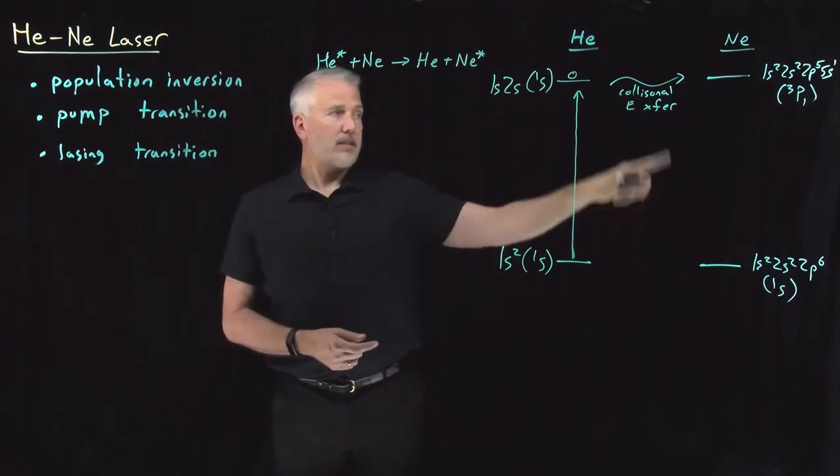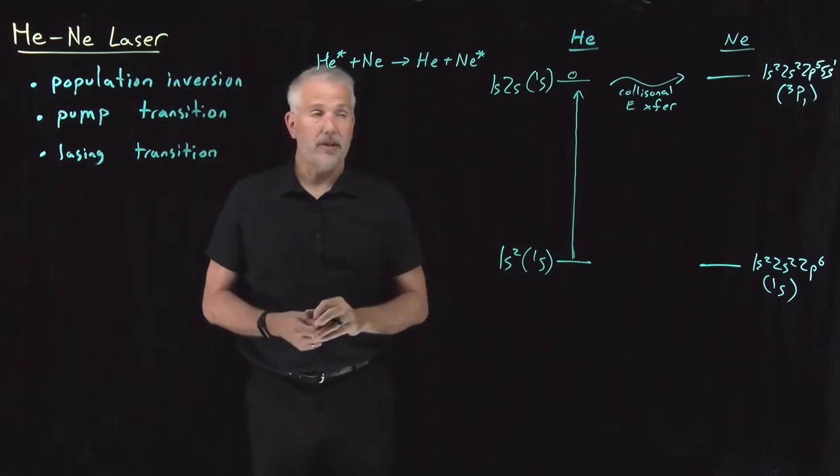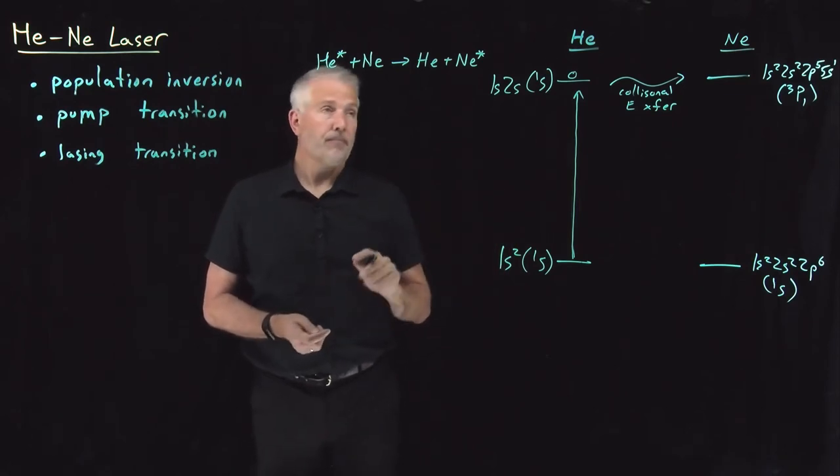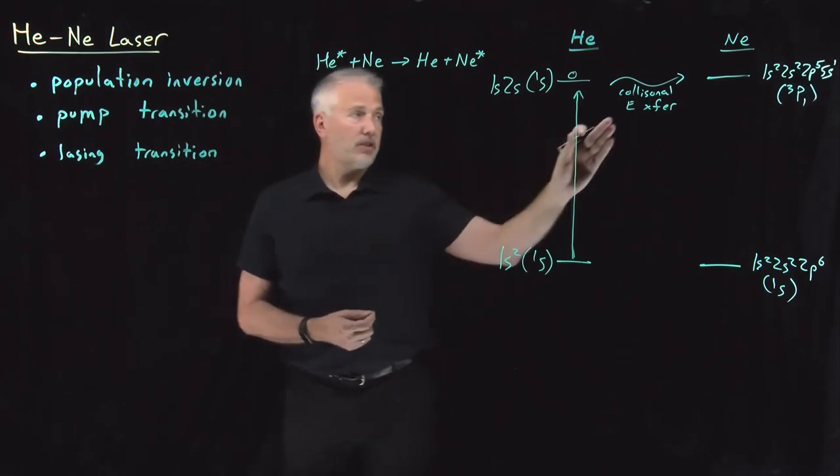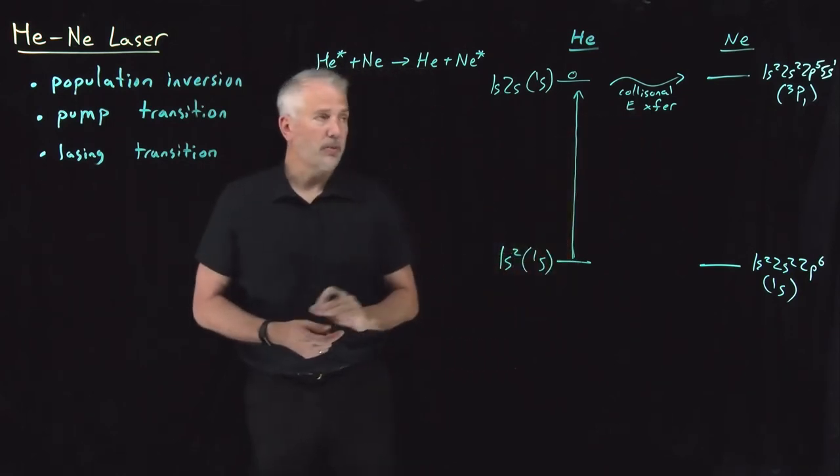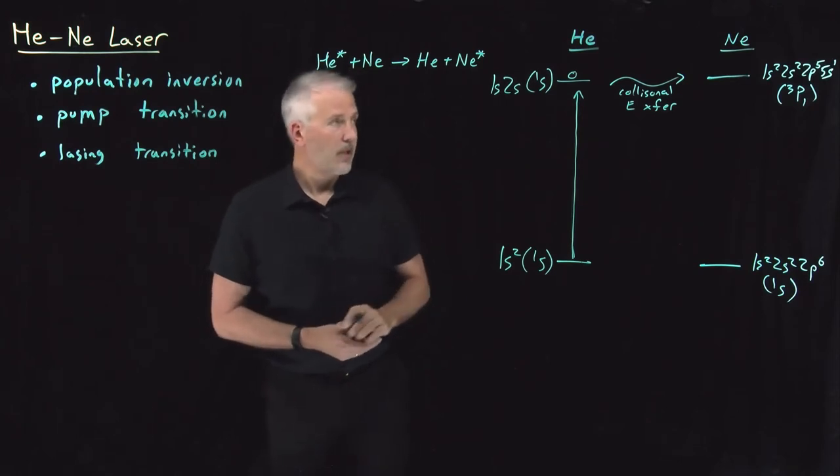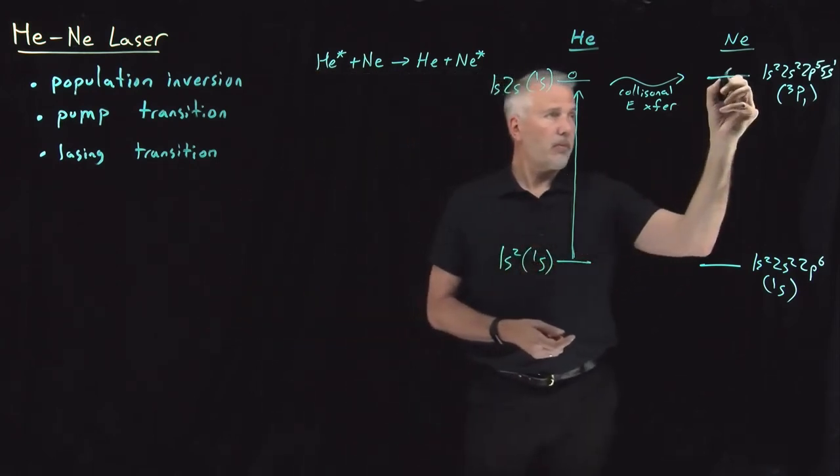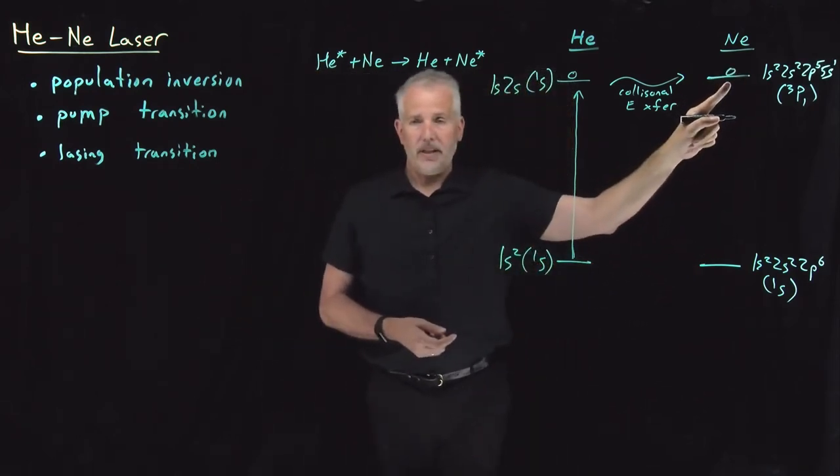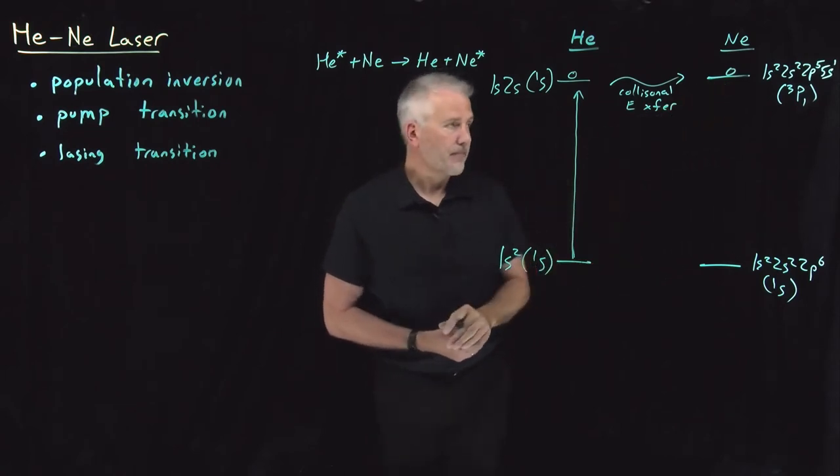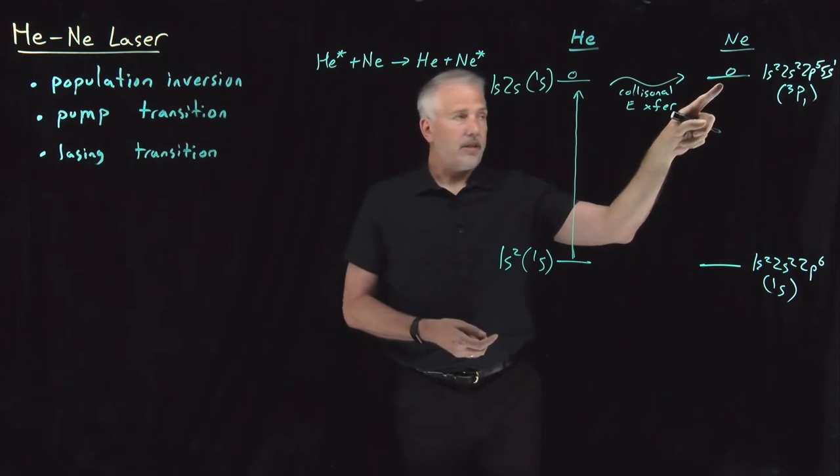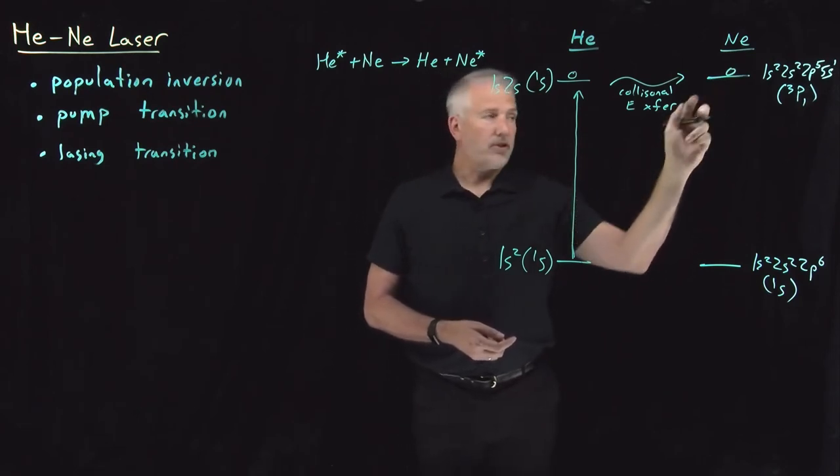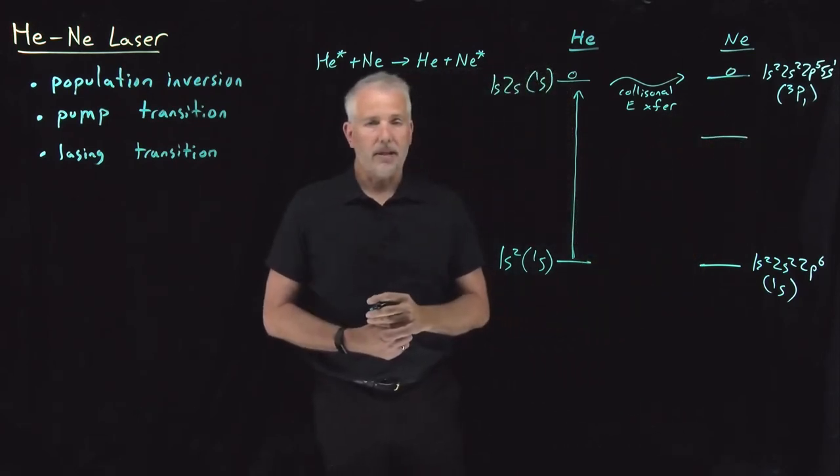The electronic excitation energy of the helium, the helium falls down, the neon gets excited. There was no radiation involved in that transfer. It didn't involve emission and absorption of a photon. It's just energy transferred due to the collision. So we call it a collisional energy transfer. The net result is we end up with a neon atom in this excited electronic state.